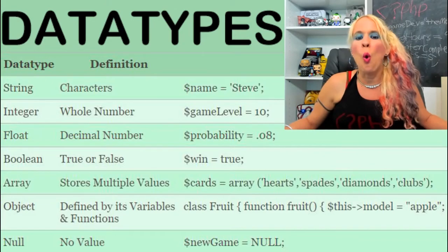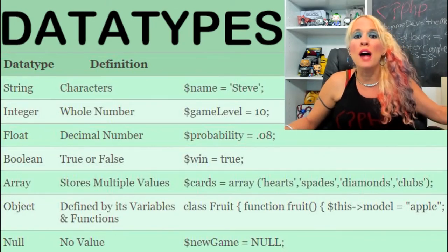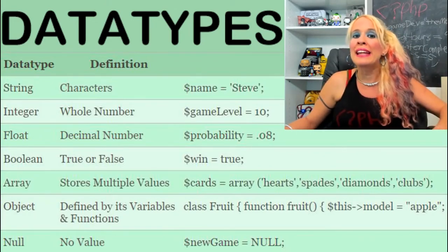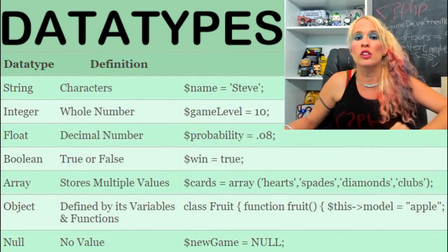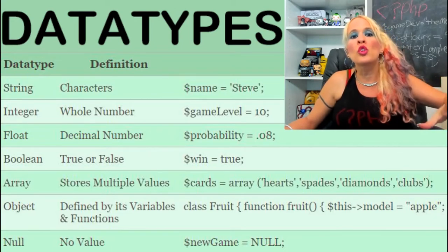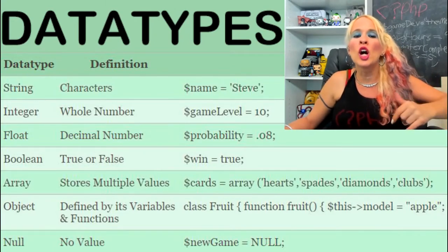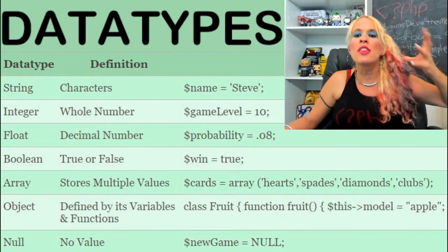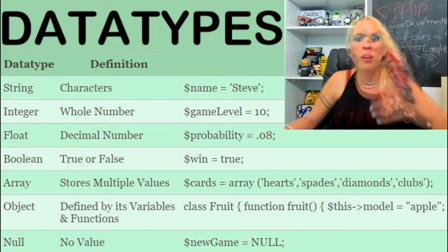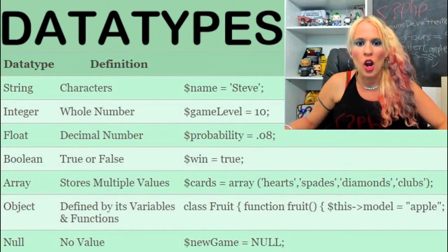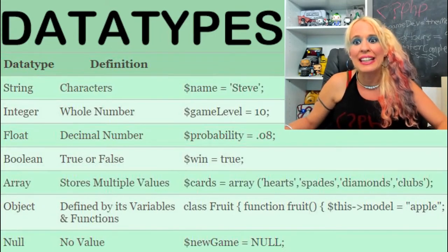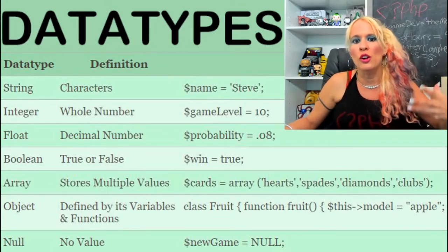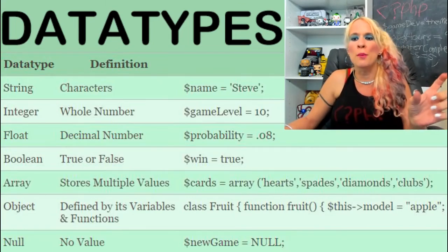An integer is a whole number — it can be positive or negative, but there's no decimal or fractions. So you're talking about 1, 2, 3, 0, negative 1, negative 2, negative 3. My example on the chart says dollar sign game level equals 10. That's an example of an integer variable — it's a whole number.